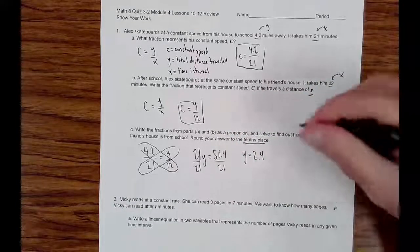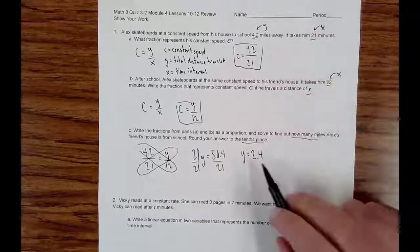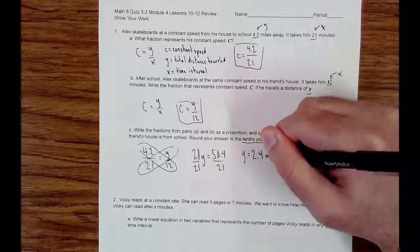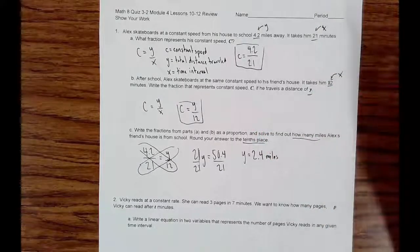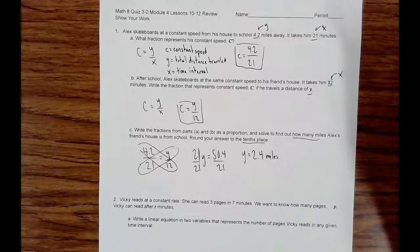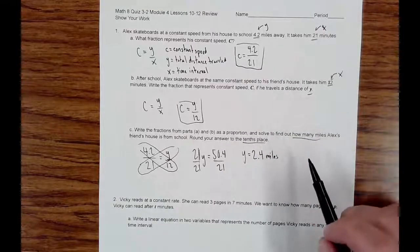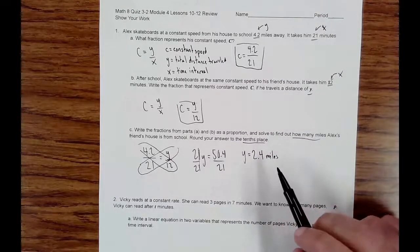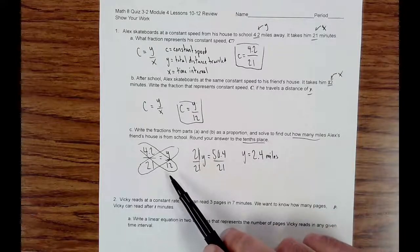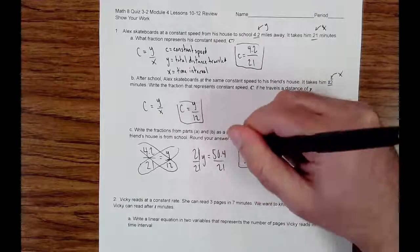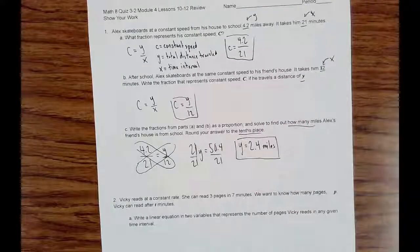And we were finding how many miles, the distance, the Y value. So it's Y equals 2.4 miles. So we know that if he goes, it's going to take him 12 minutes to go 2.4 miles. And that is the answer. That's number one.